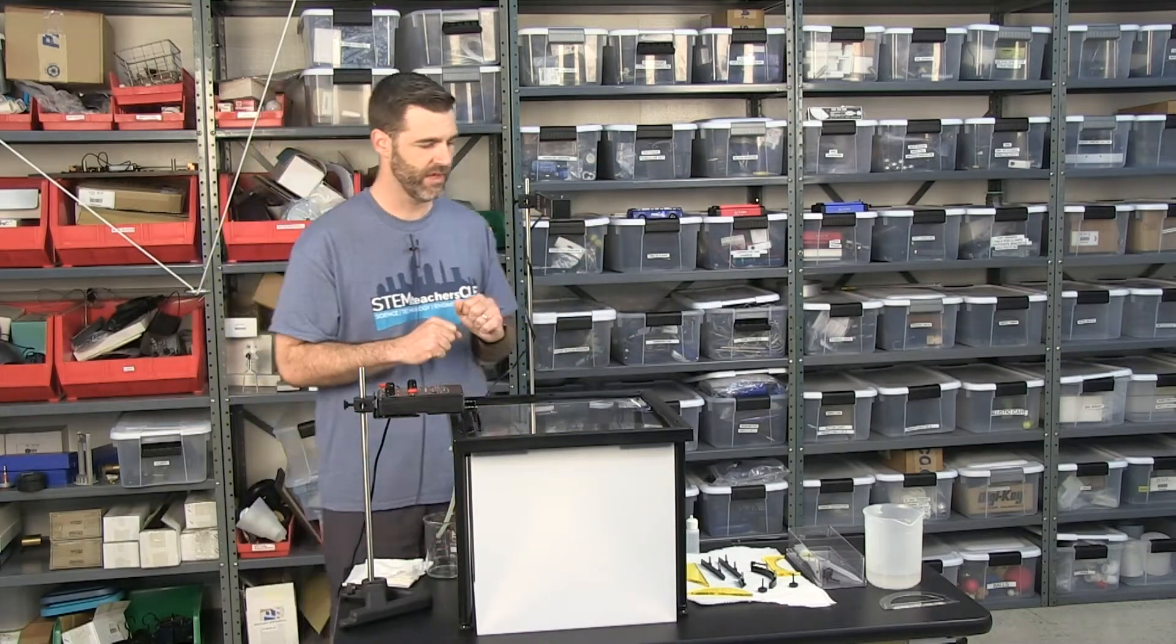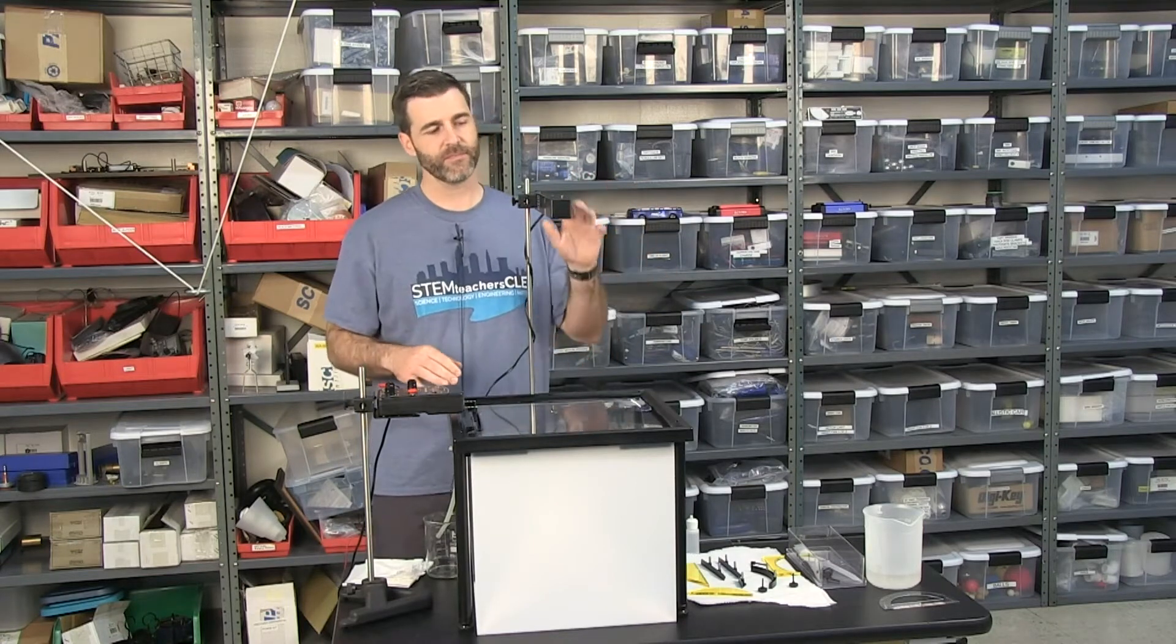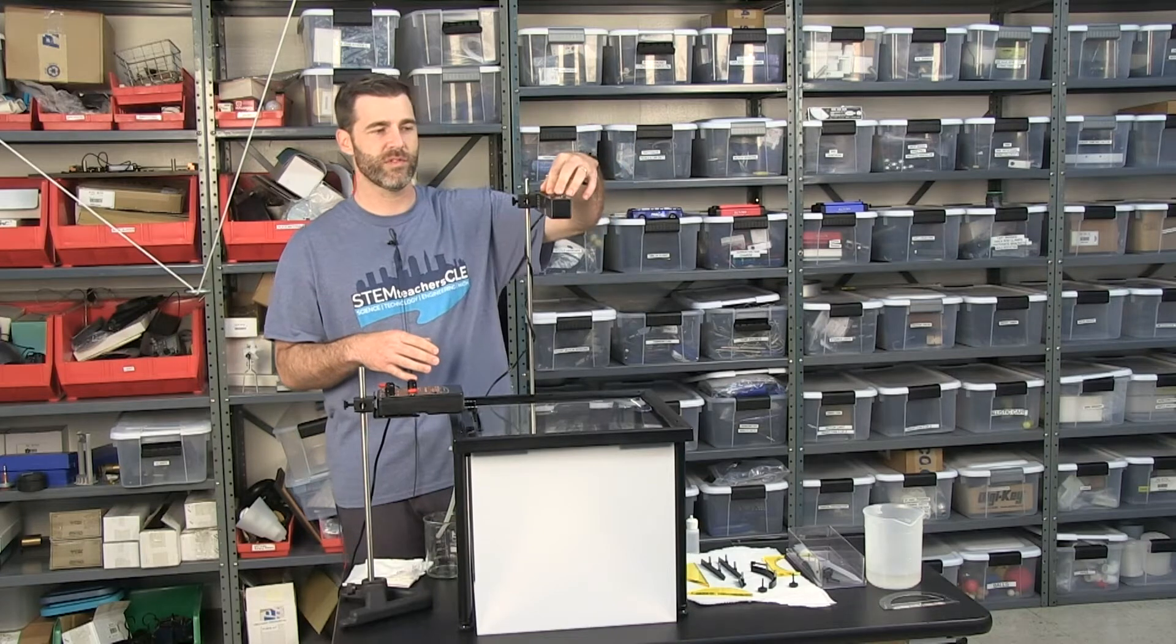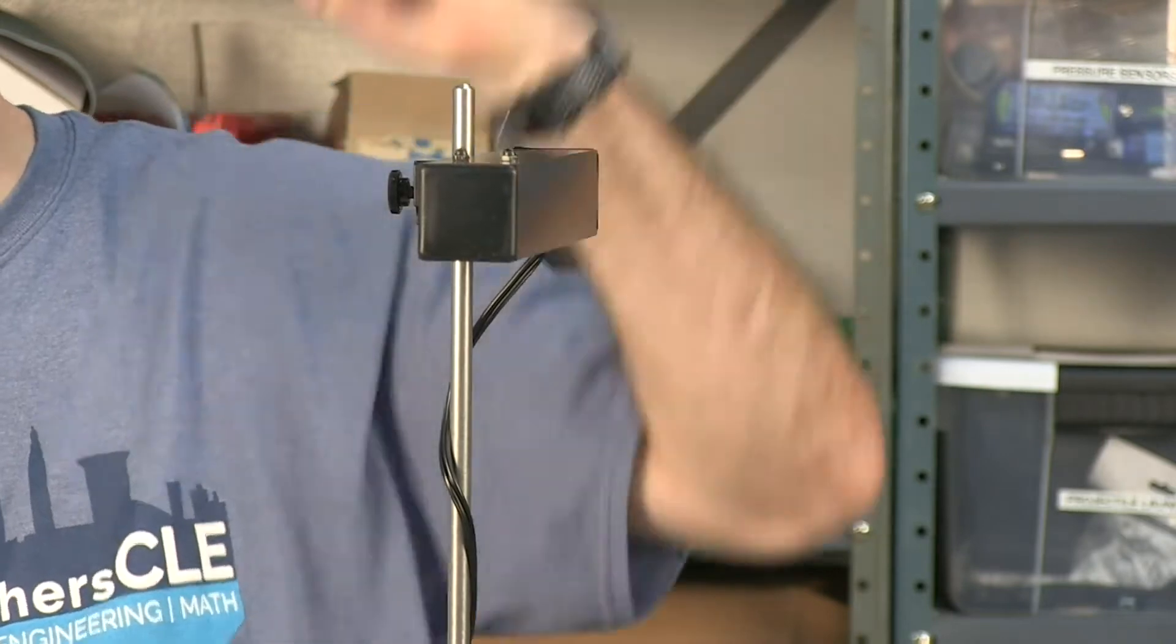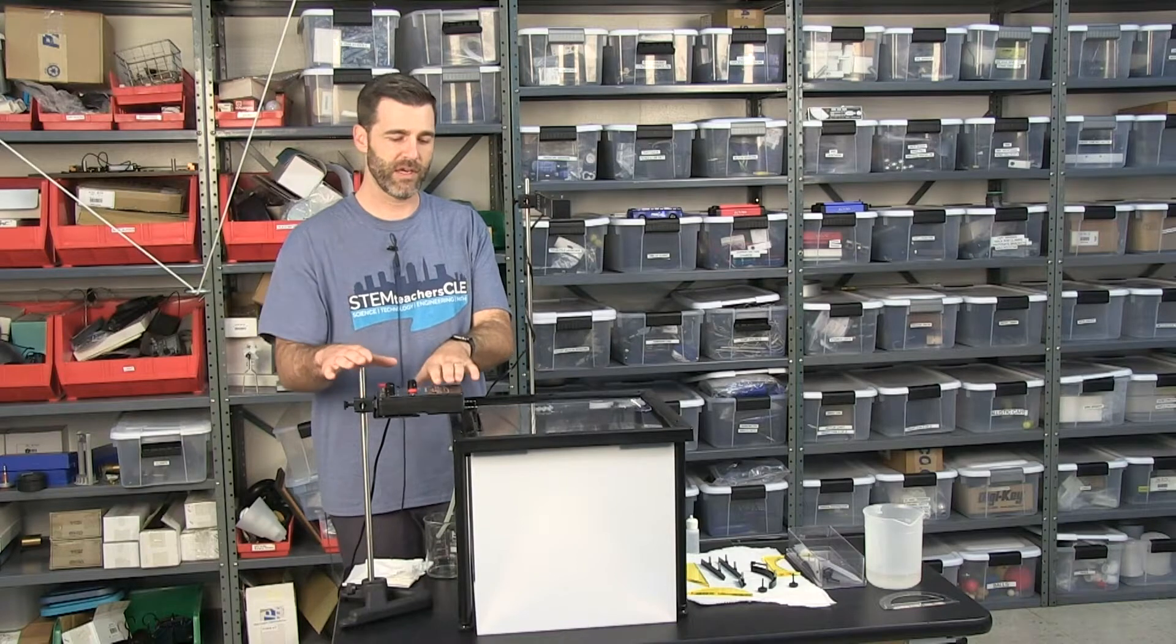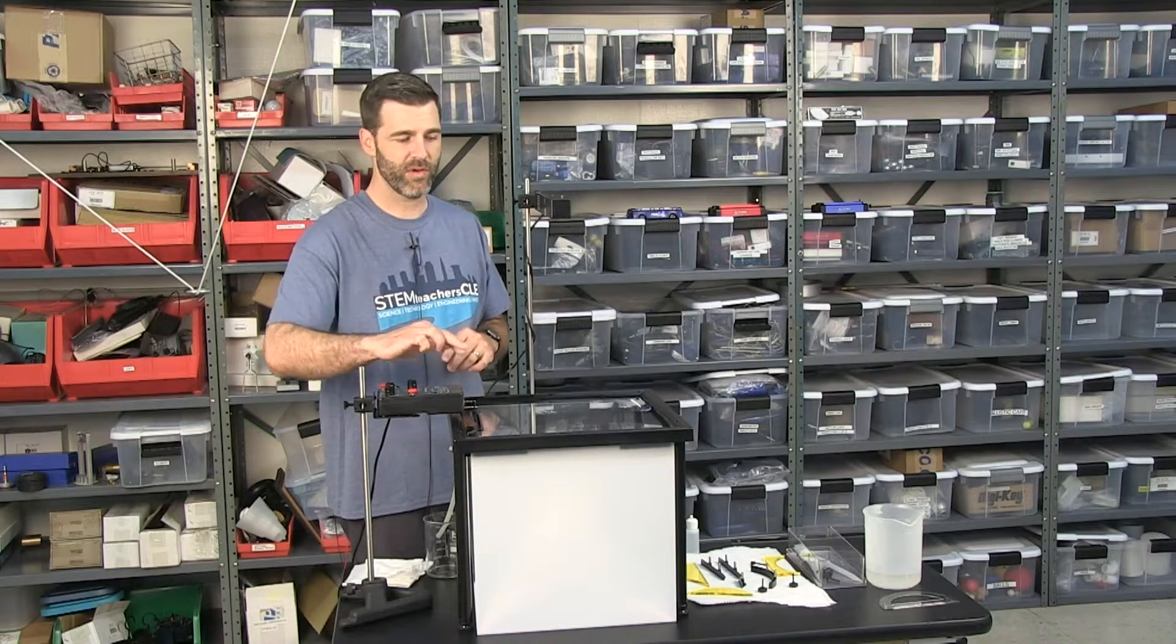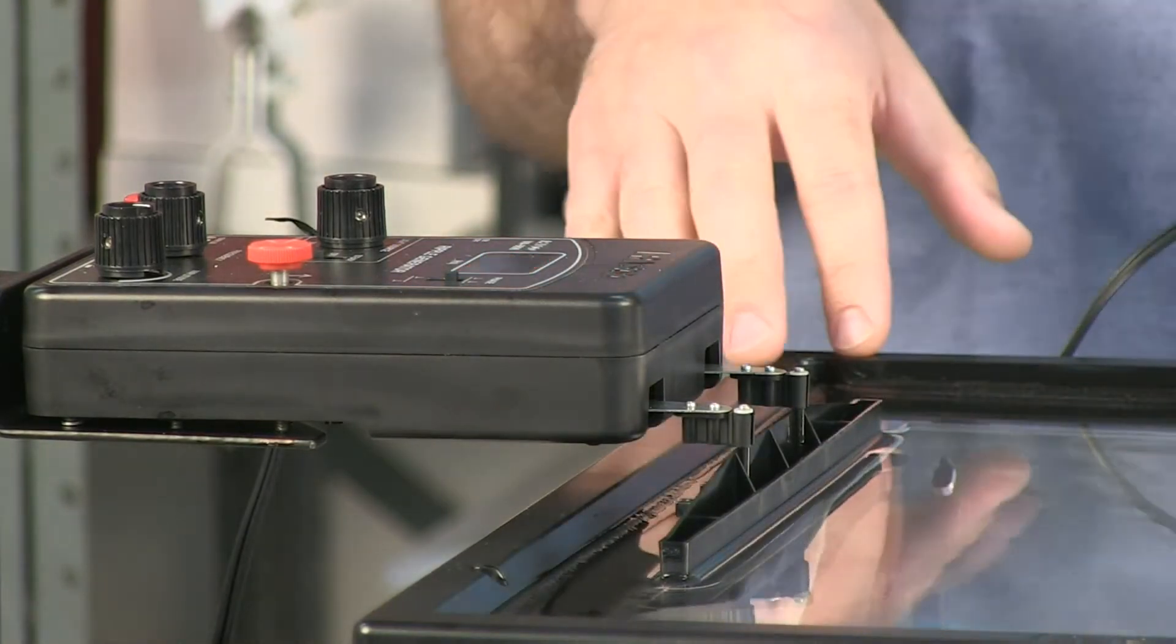But before I turn this on and get the waves going, I just want to go over a couple of the things, the features that you see here. This is an LED light source. And so this light source is different than our old light source, which was a halogen bulb that was mechanically strobed. This is electrically, electronically strobed, and it's done so through this ripple generator box right here.